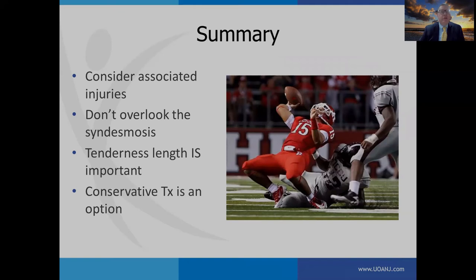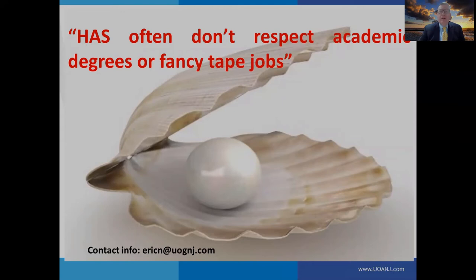In summary: consider associated injuries with ankle sprains, don't overlook the syndesmosis, and tenderness length is important not just for identifying degree of syndesmotic injury but also for locating the interosseous ligament. Conservative treatment is an option, but make sure there's at least some component of non-weight bearing in the early phase. As a parting pearl: high ankle sprains don't respect academic degrees or fancy tape jobs. Even knowing a great deal about syndesmotic sprains, there are times when you get totally fooled.